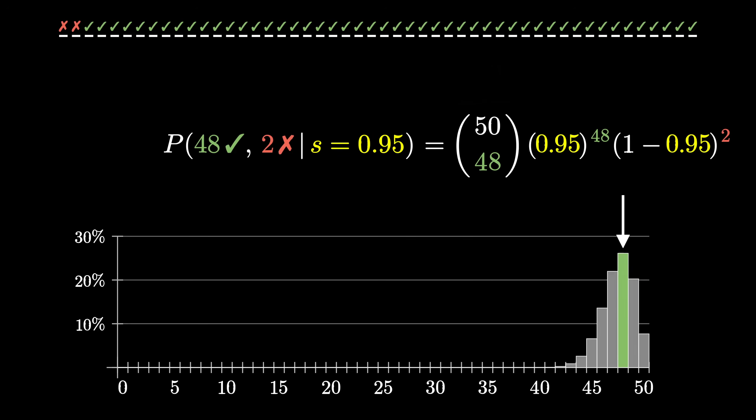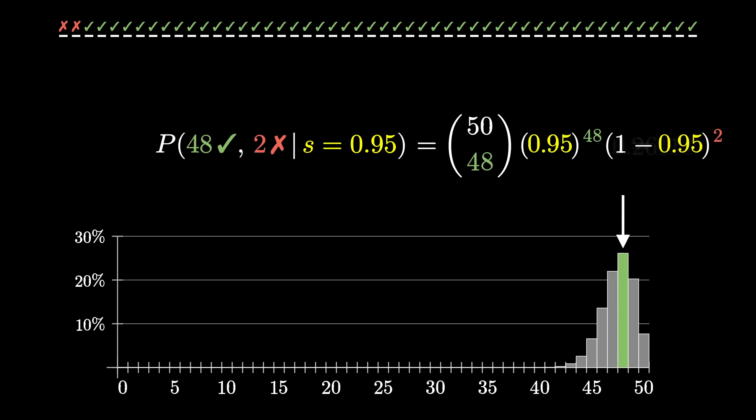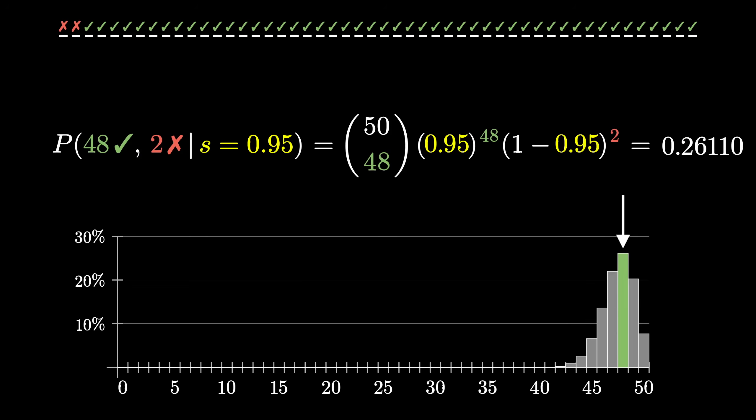What do we multiply by this count? Well, it's the probability of any one of these patterns, which is the probability of a single positive review raised to the 48th times the probability of a single negative review squared. Crucial is that we assume each review is independent of the last, so we can multiply all the probabilities together like this. And with the numbers we have, when you evaluate it, it works out to be 0.261, which matches what we just saw empirically with the simulation.